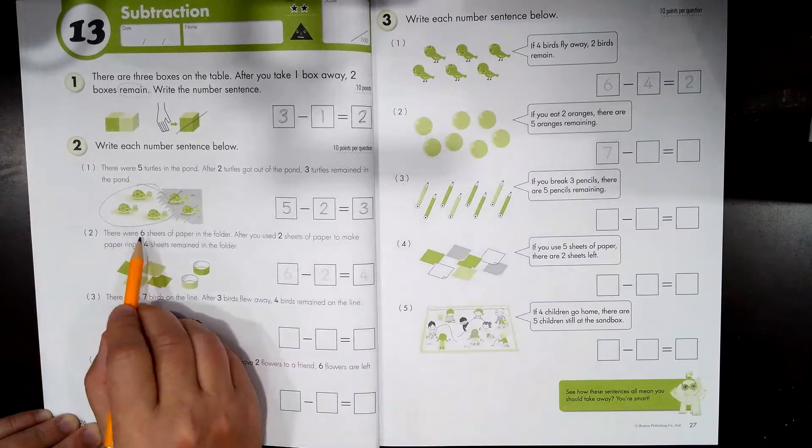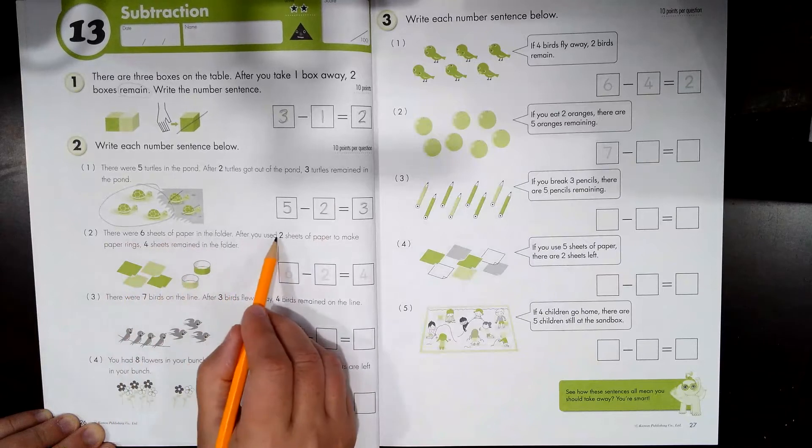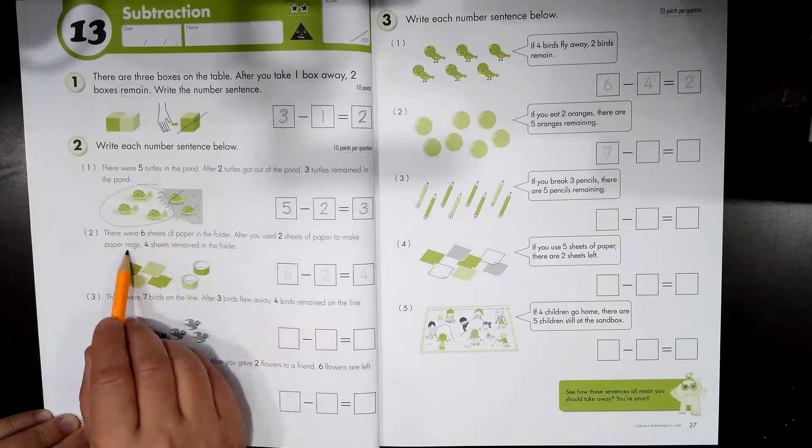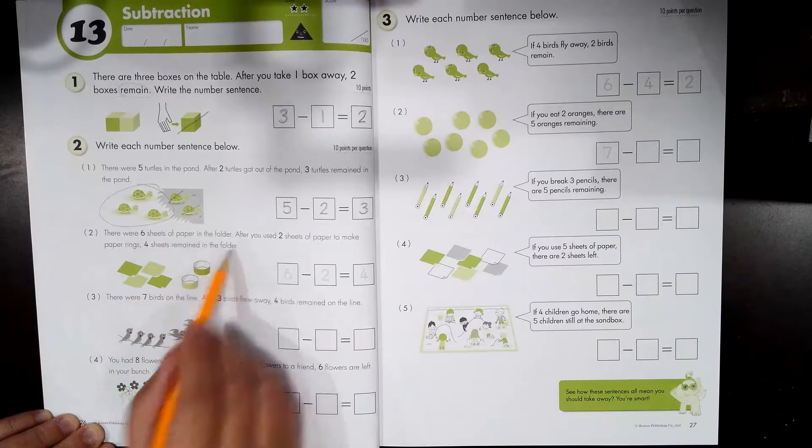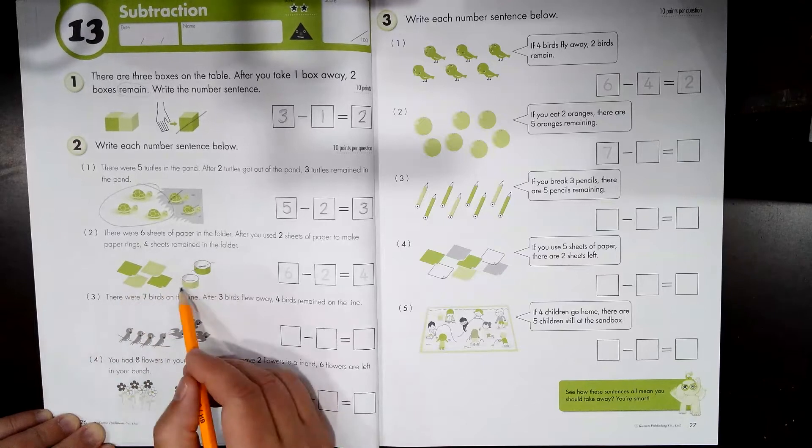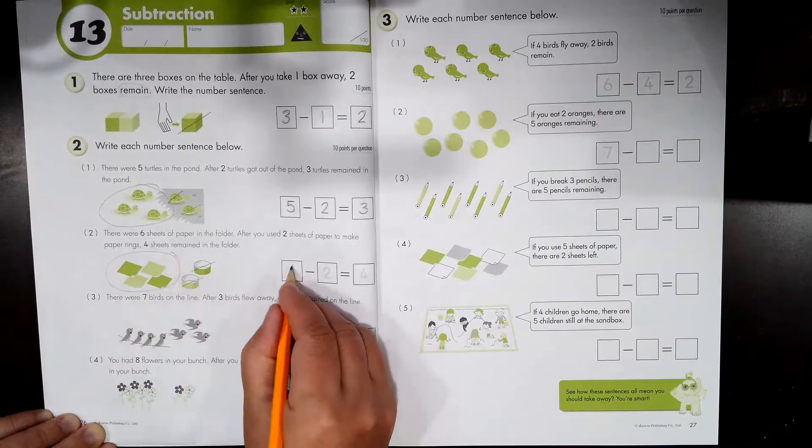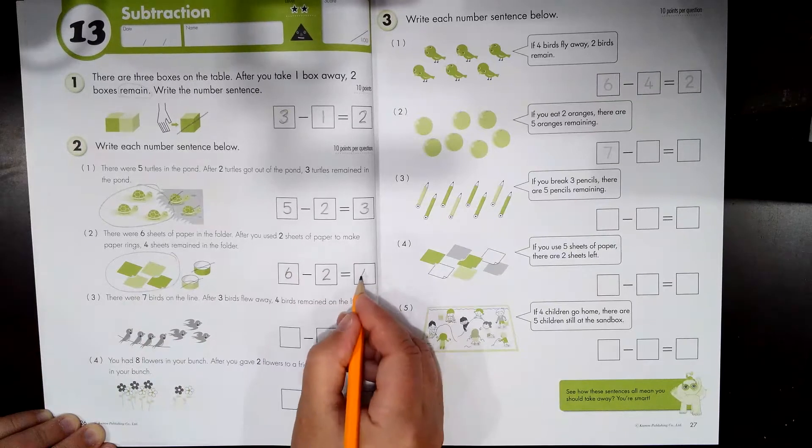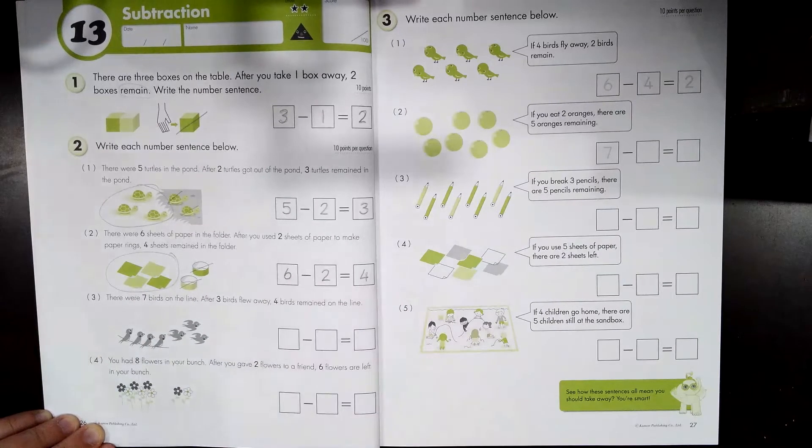There were six sheets of paper in the folder. After you used two sheets of paper to make paper rings, four sheets of paper remained in the folder. So you had six. Two were used. Four remain. Six sheets of paper minus two sheets of paper equals four sheets of paper. This is our number sentence.